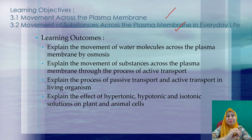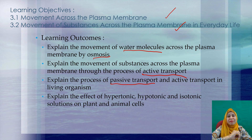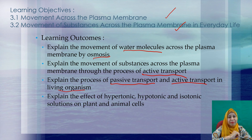The learning outcomes: first, explain the movement of water molecules across the plasma membrane by osmosis. Second, explain the movement of substances across the plasma membrane through the process of active transport. Third, explain the process of passive transport and active transport in living organisms. And the last learning outcome, explain the effect of hypotonic and isotonic solution on plant and animals.